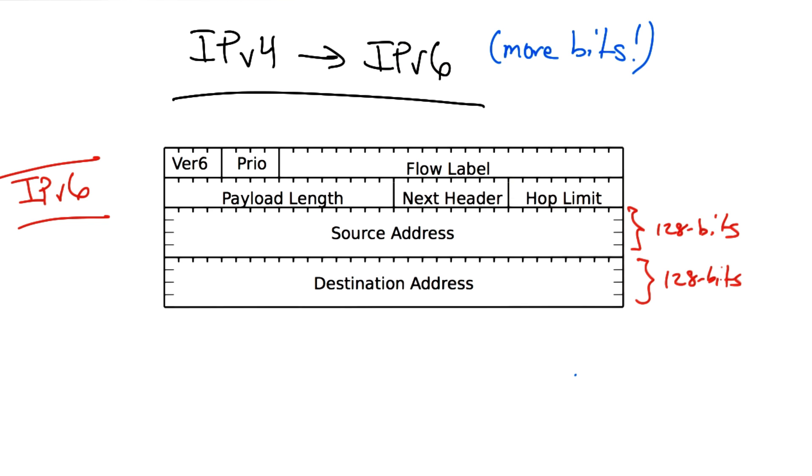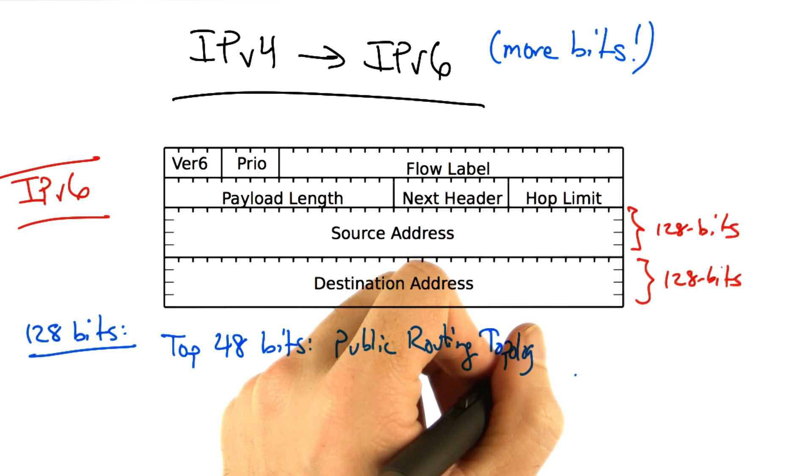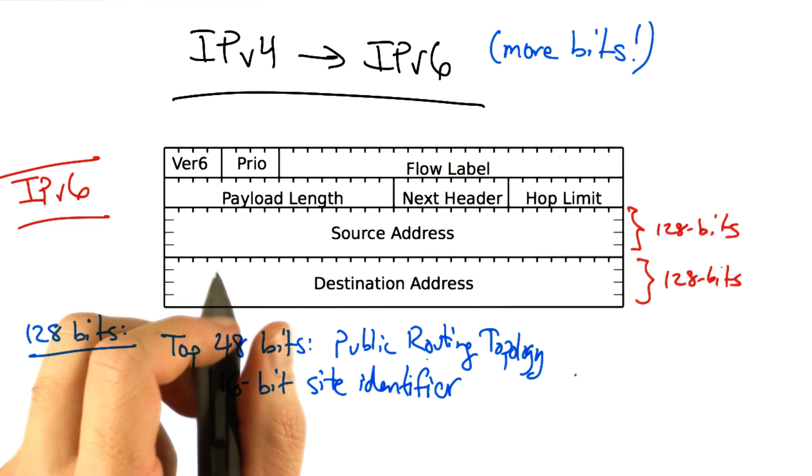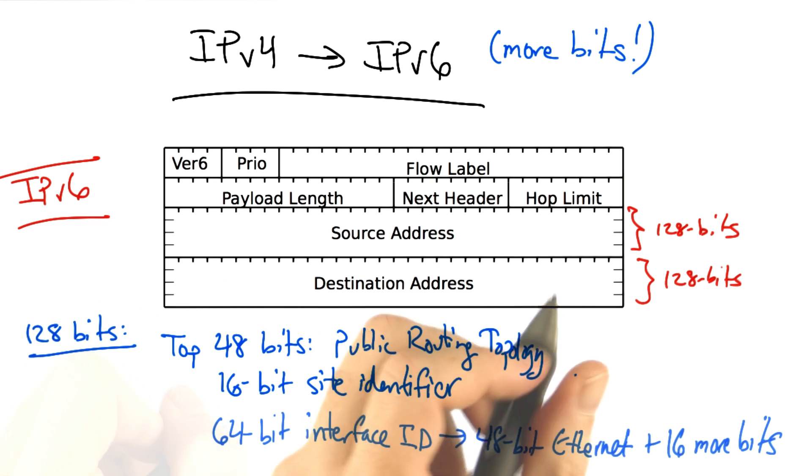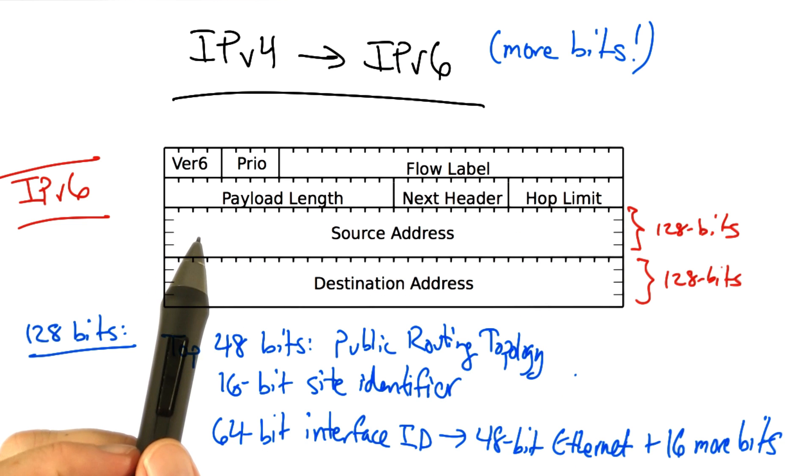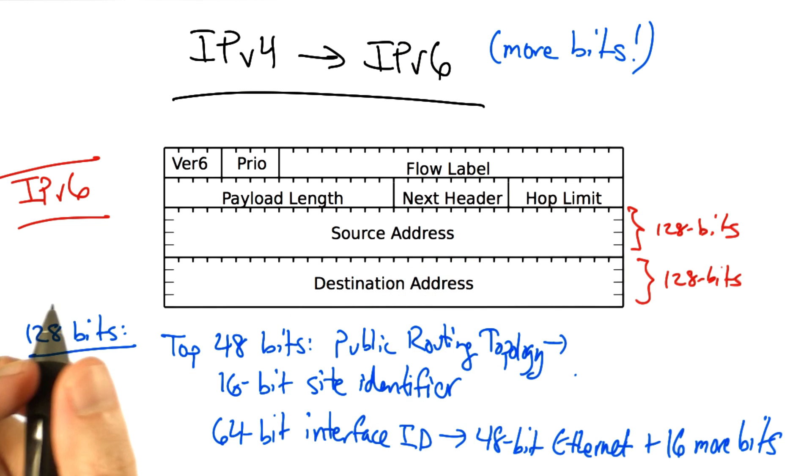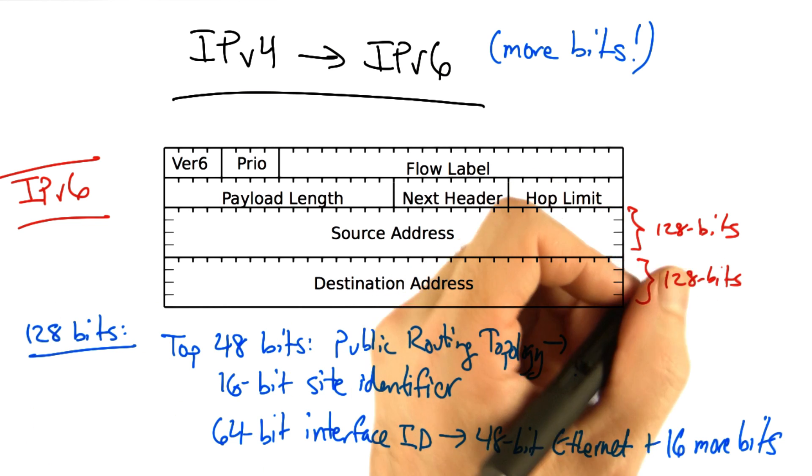Now the format of these addresses are as follows. Of the 128 bits, the top 48 bits are for the public routing topology, we have a 16-bit site identifier, and finally a 64-bit interface ID, which effectively has the 48-bit Ethernet address of the interface plus 16 more bits. Now the top 48 bits can be broken down further.